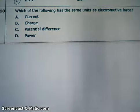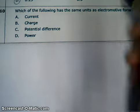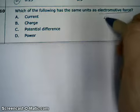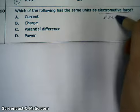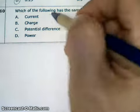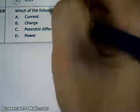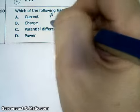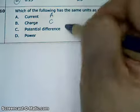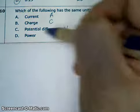Question number 10: which of the following has the same unit as electromotive force (EMF)? Current has the unit ampere, charge has the unit coulomb, and potential difference has the unit volts.